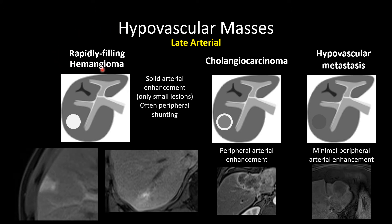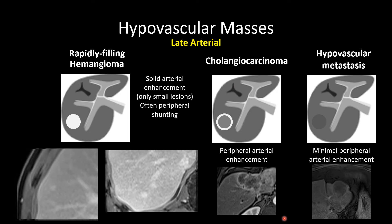Rapidly filling hemangiomas fall back into a hypervascular differential and may show solid arterial phase hyper enhancement. They tend to be less than two centimeters, even more commonly less than one centimeter, and are often associated with some degree of perilesional shunting. They tend to follow blood pool on subsequent phases of contrast.